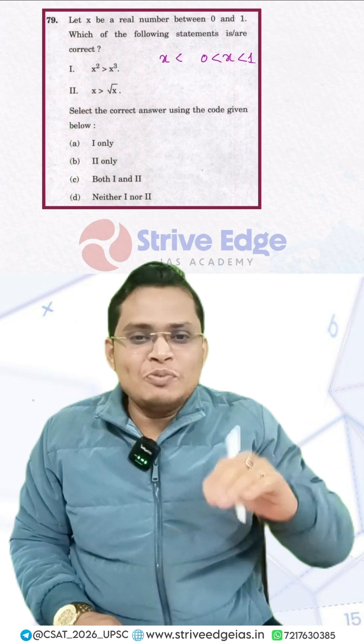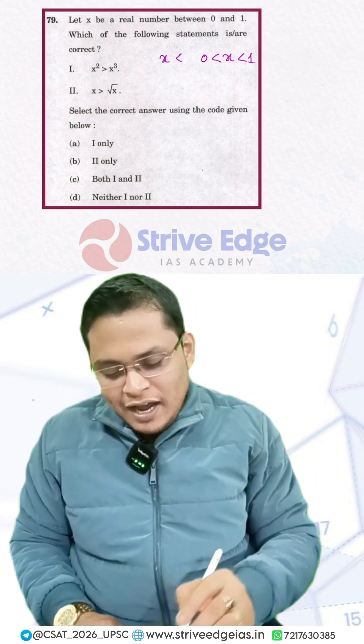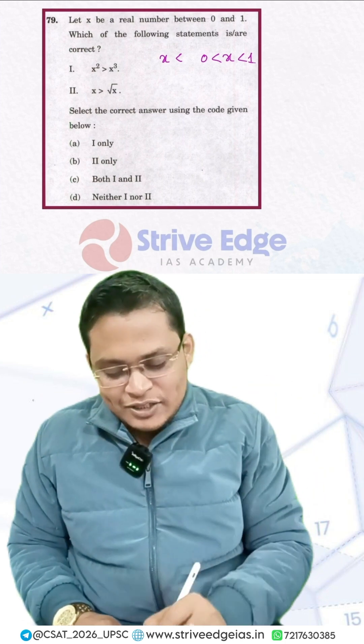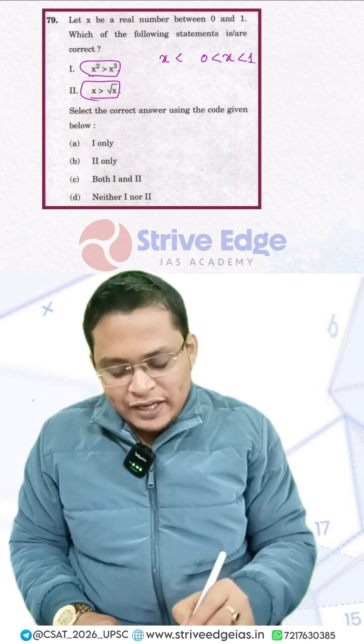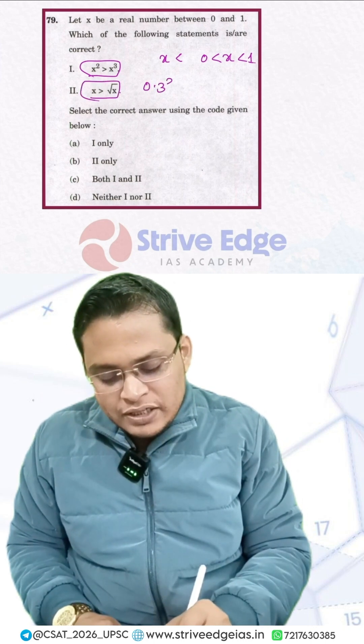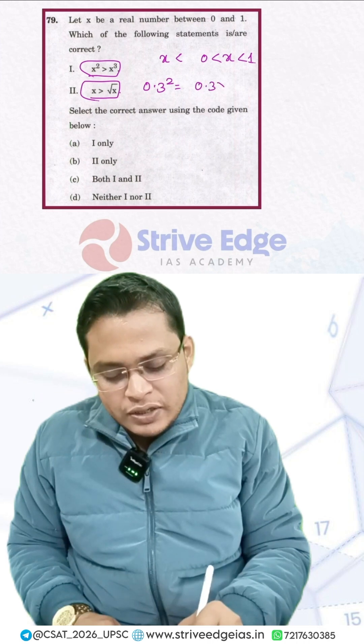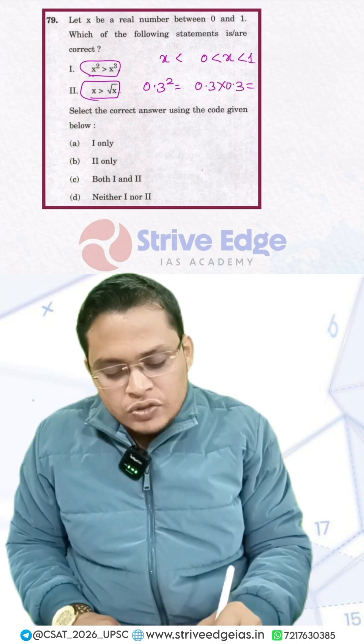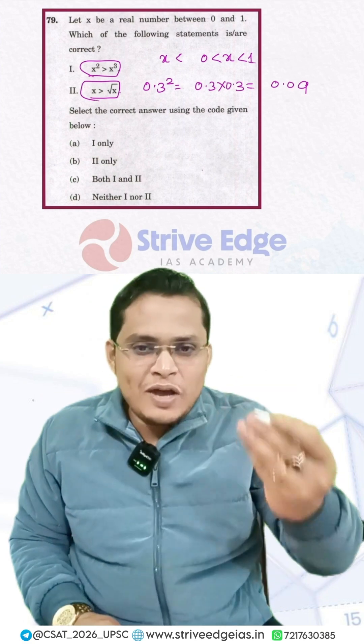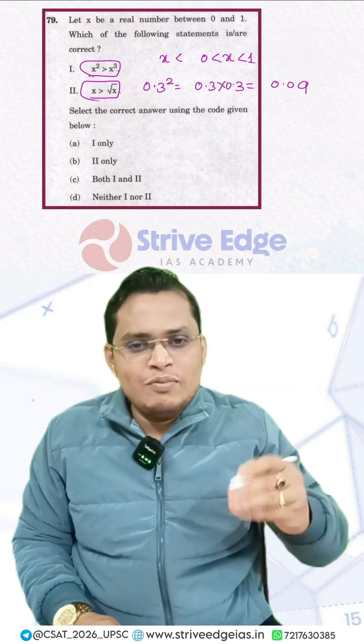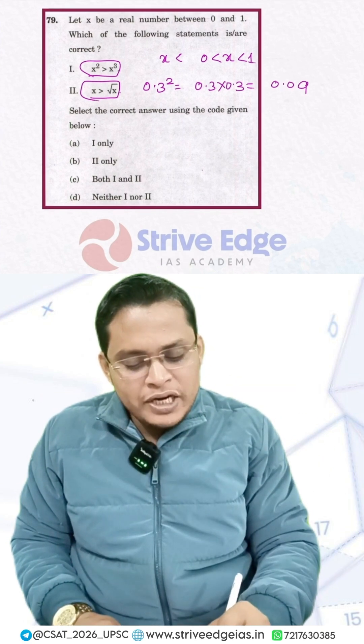That means the number is more than 0, less than 1, and x square is greater than x. The first statement is saying x is greater than root of x. So let's say what is the value of 0.3 square. So I know that 0.3 into 0.3 is 0.09. So I can see by squaring a number less than 1 and more than 0, the number will be reduced.